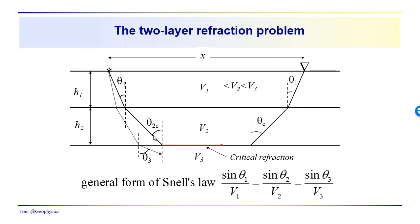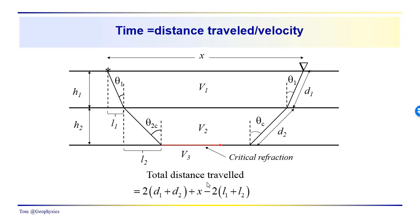At some point the ray path going down through layer 2 will strike the interface between layers 2 and 3 at an angle which causes the refracted ray to refract at an angle of pi over 2 and continue right along the interface between media 2 and 3, traveling with velocity v3. From the general form of Snell's law: sin theta 1 over v1 equals sin theta 2 over v2 equals sin theta 3 over v3, and so on — we'll use that relationship in a few minutes.